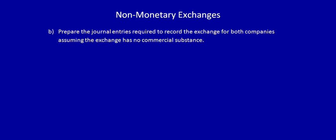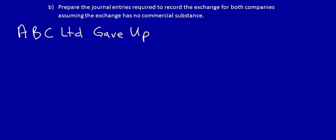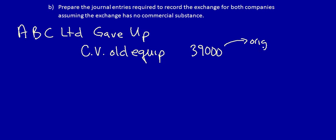Let's start with ABC Limited. We're going to calculate what did they give up. Because it has no commercial substance, we use the carrying value of the old equipment to calculate what has been given up. Fair value is only used to calculate what was given up if the exchange has commercial substance. Without commercial substance, we always use carrying values. The carrying value is calculated as: original cost $60,000 less accumulated depreciation $21,000, which equals $39,000.